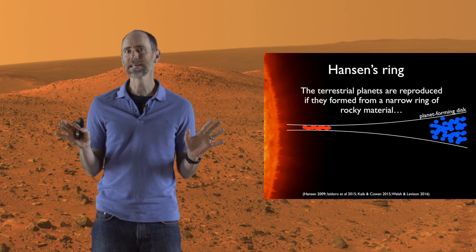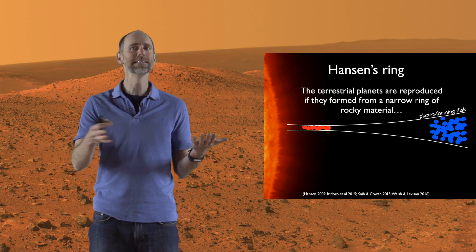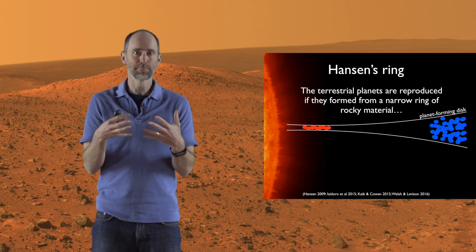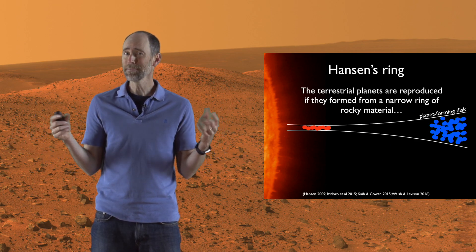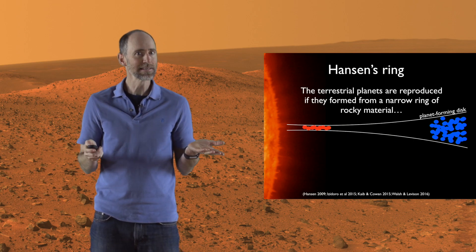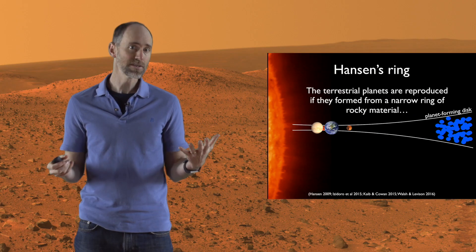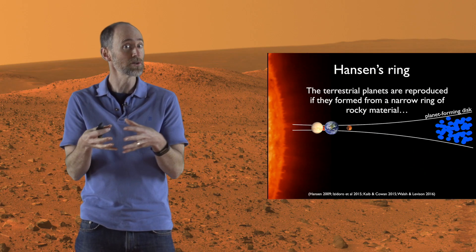A simple solution to this problem was proposed by Brad Hansen. He proposed that maybe the initial conditions for the growth of terrestrial planets were wrong. Instead of a nice smooth disk of rocky stuff as the building blocks of the terrestrial planets, maybe there was just a ring — a narrow ring. Some of those bodies might have gotten kicked out of the ring; Mars would be one of these objects that was kicked out and effectively starved, whereas planets that grew within the ring, Venus and Earth, could grow big. This nicely explains why Mars is so much smaller than Earth.